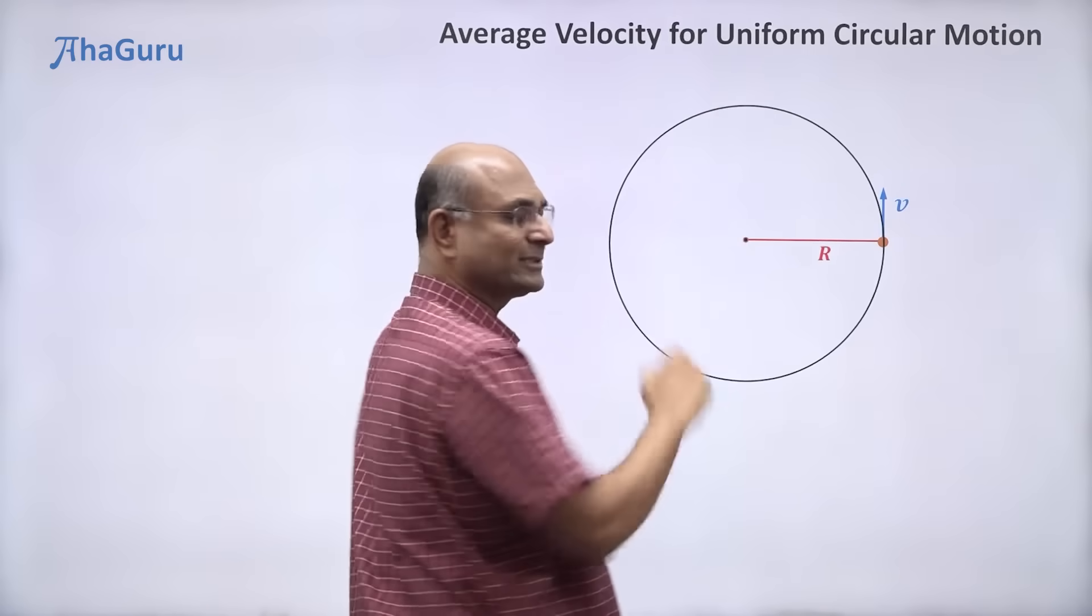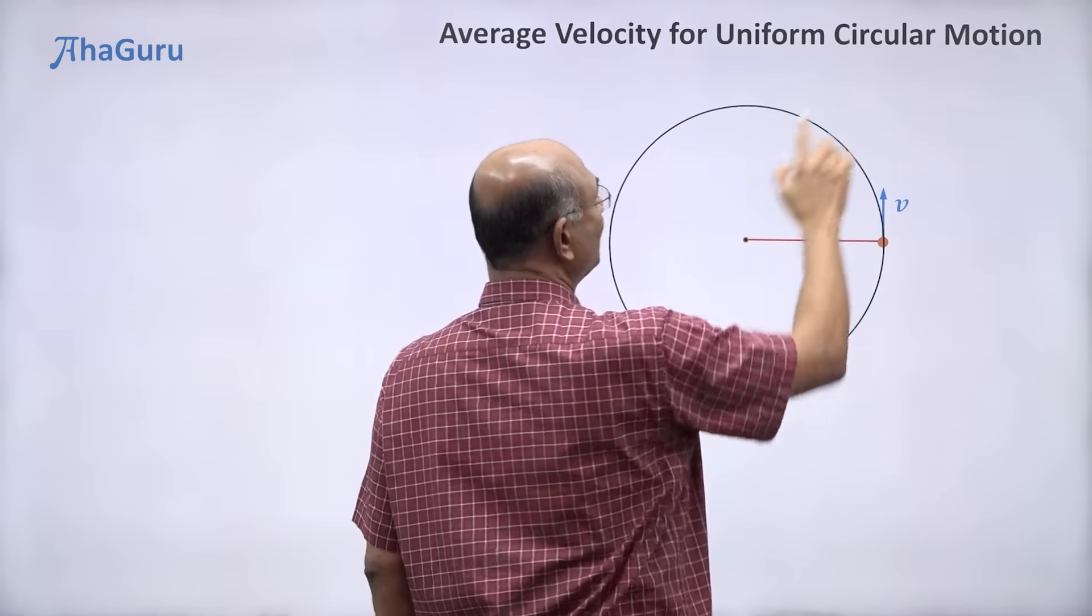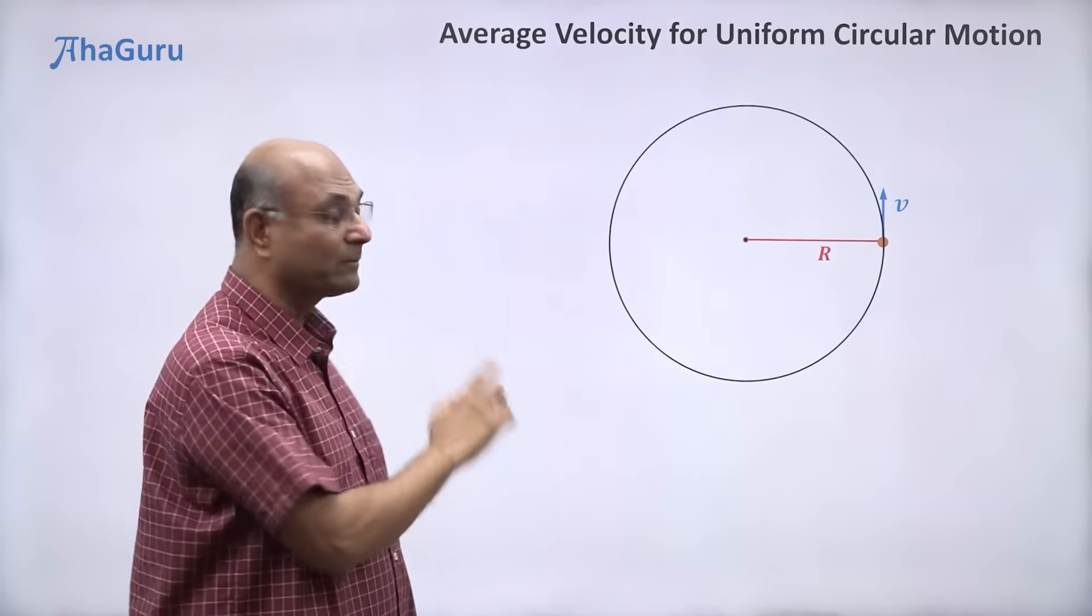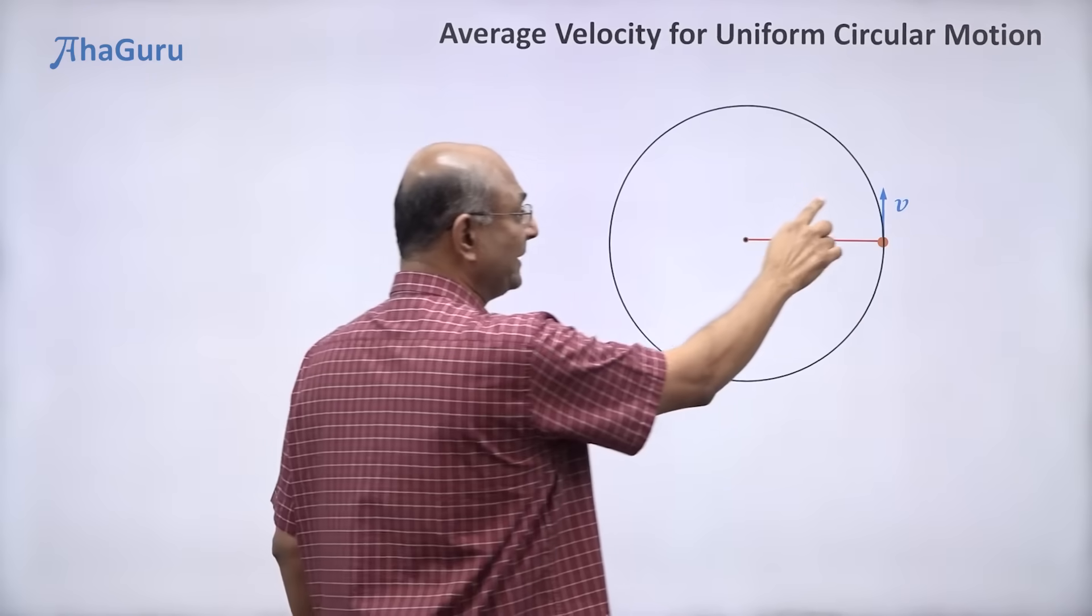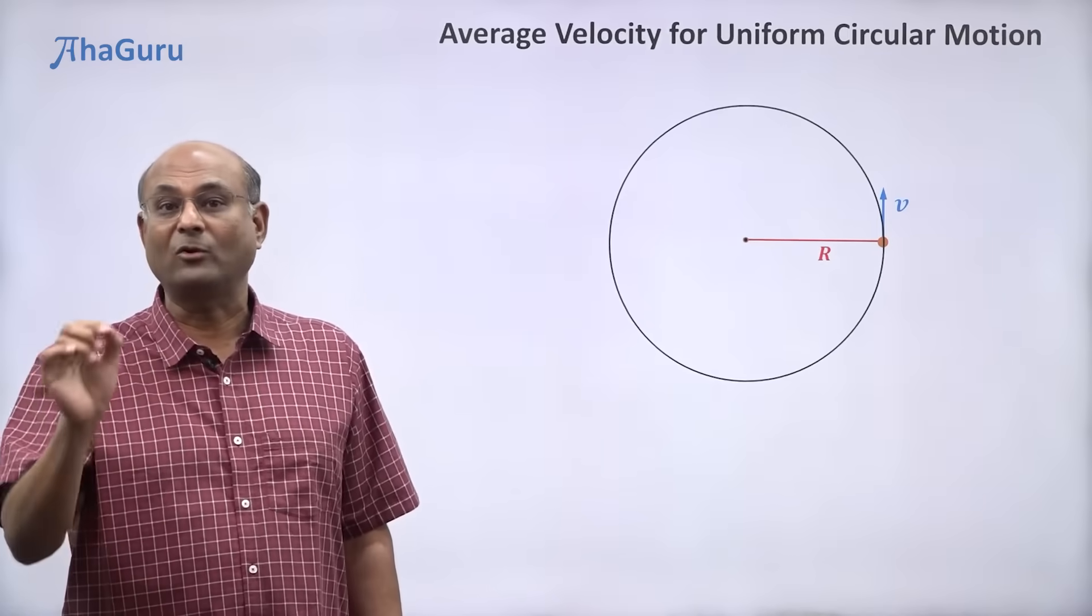Because if the linear speed is constant, the angular speed will be constant. So when we are talking about uniform circular motion, we are talking about an object moving with constant linear speed v and a constant angular speed omega.